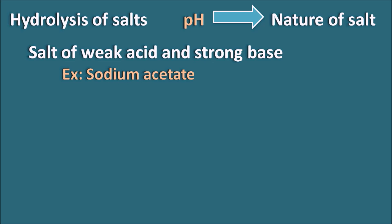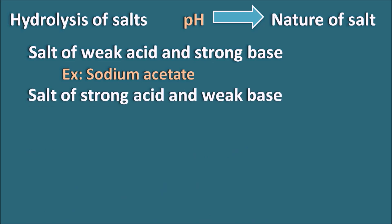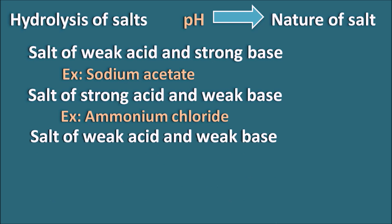We can also have salts of strong acid and weak base — for example, ammonium chloride. Ammonium chloride is obtained from hydrogen chloride, which is a strong acid, and ammonia, which is a weak base. We can also have salts of weak acid and weak base — for example, ammonium acetate, obtained from acetic acid and ammonia.